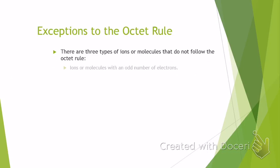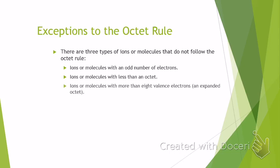So there are three possible exceptions or violations of the octet rule. One is you could have ions or molecules that have an odd number of electrons. The second is you could have an ion or a molecule that has less than an octet. And finally, you can have an ion or molecule that has more than eight valence electrons — an expanded octet.